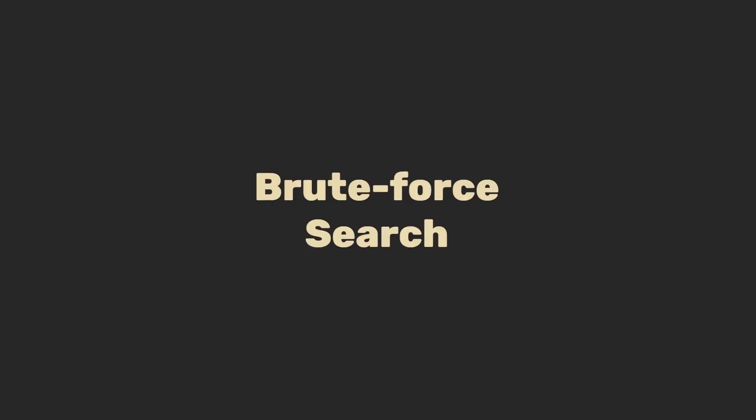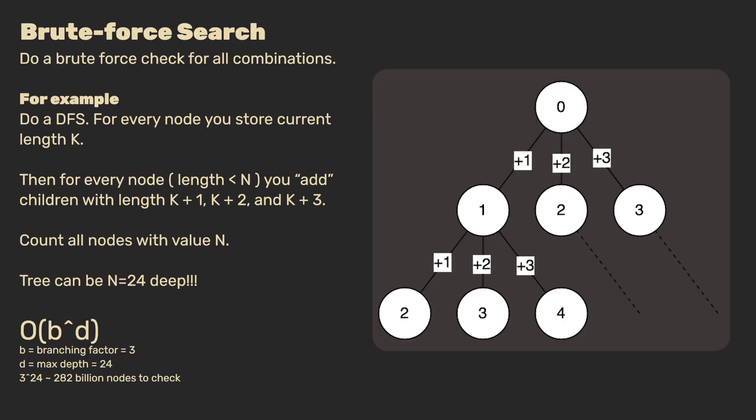Let's start with a brute force algorithm. A brute force algorithm simply checks all possible combinations. For example, we can do a depth-first search where every node represents the length of the plank currently constructed. Let's call this length k. Then, for every node of which the length is still smaller than n, we can add children with lengths k plus 1, k plus 2, and k plus 3. The values which we add, of course, represent adding a new piece of that specific length. Because we always add non-zero values and we do not recurse further if the current value of a node is greater or equal to n, we guarantee that our search comes to end. At that point, we simply have to count all the nodes which have a value equal to n, giving our solution.